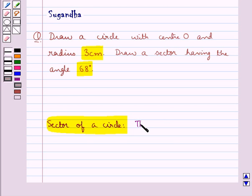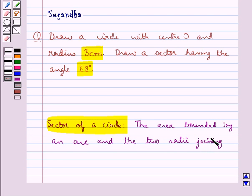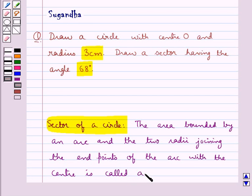The area bounded by an arc and the two radii joining the endpoints of the arc with the center is called a sector.